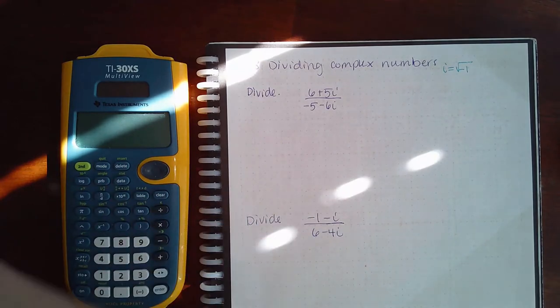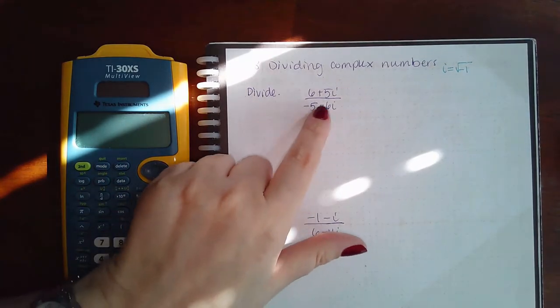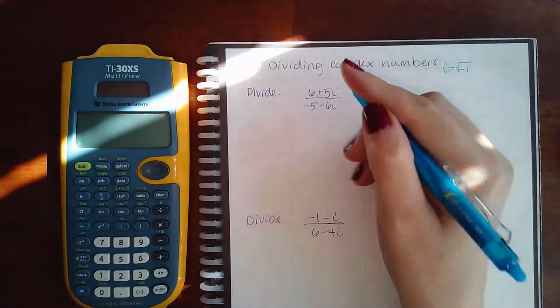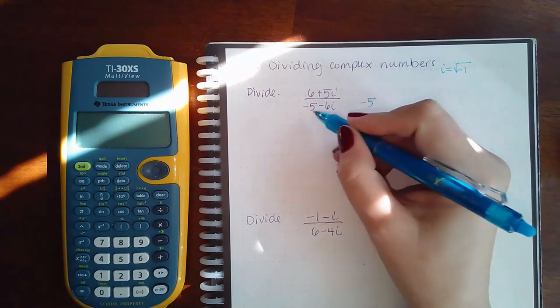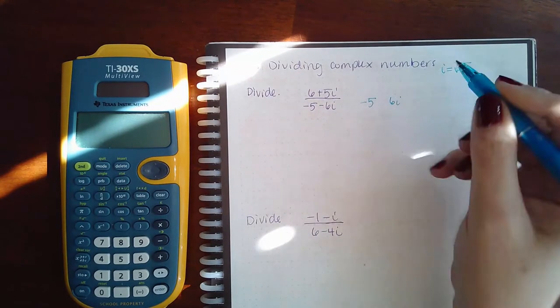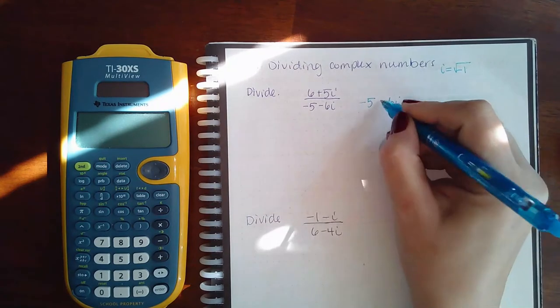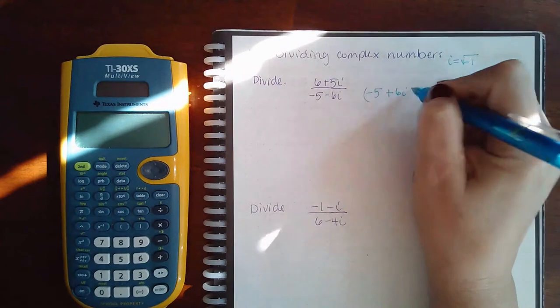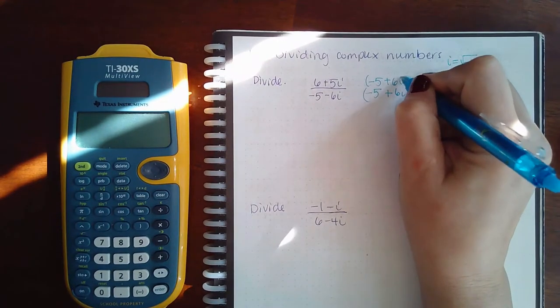How do we rationalize denominators that have a binomial? We use the conjugate. So we use the first number exactly as it was, sign and all. We use the second number without the sign, but then we change it to the opposite in the middle. And we use that same number on the top and the bottom.